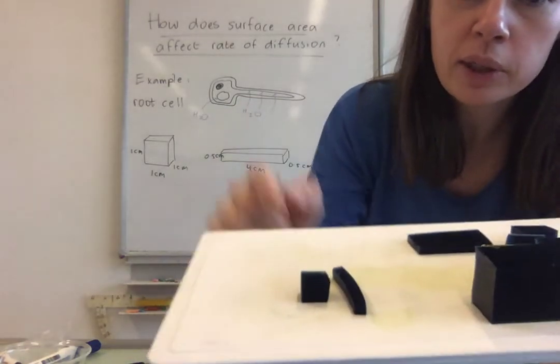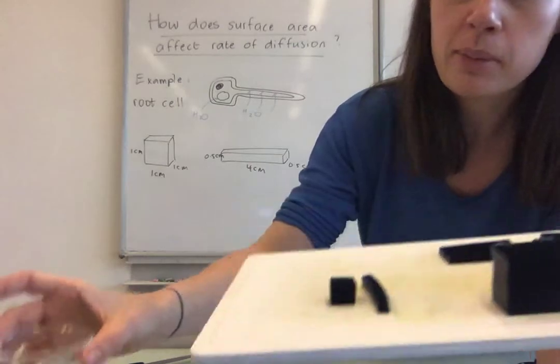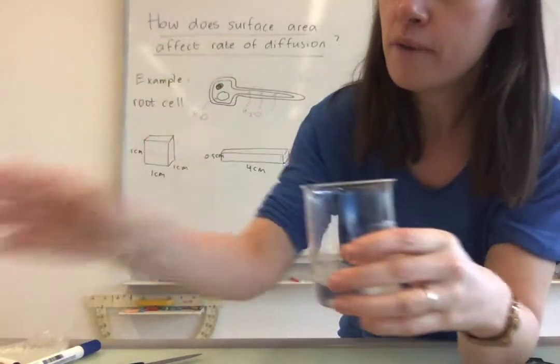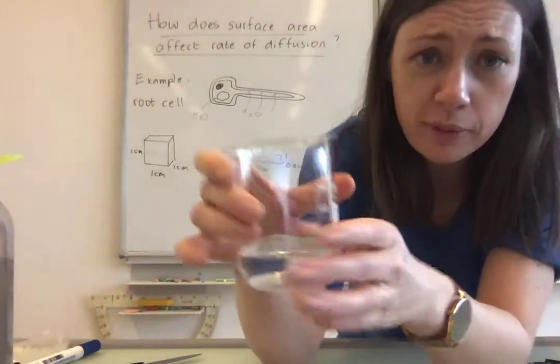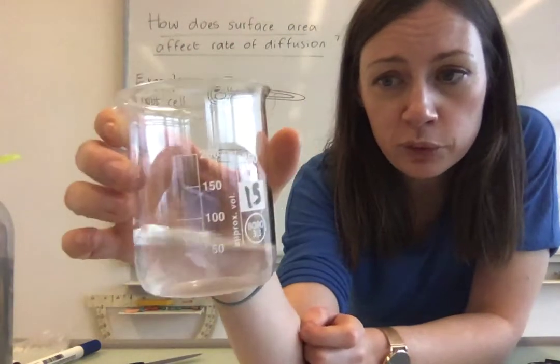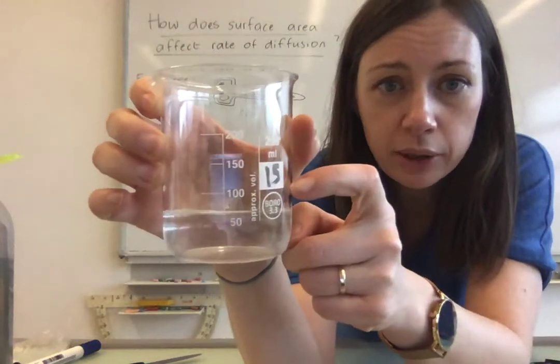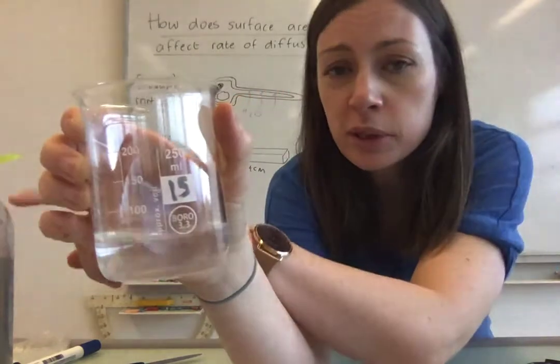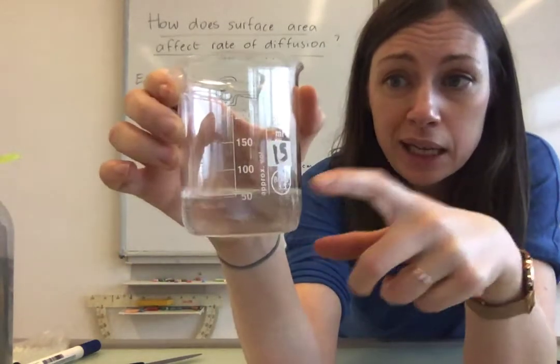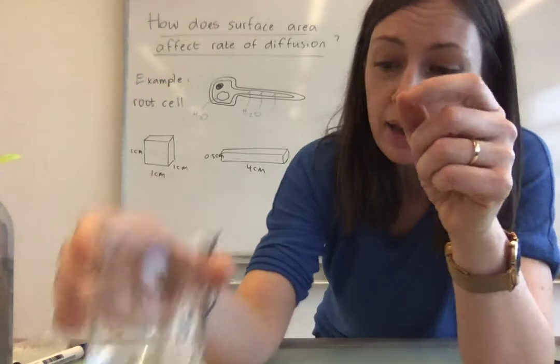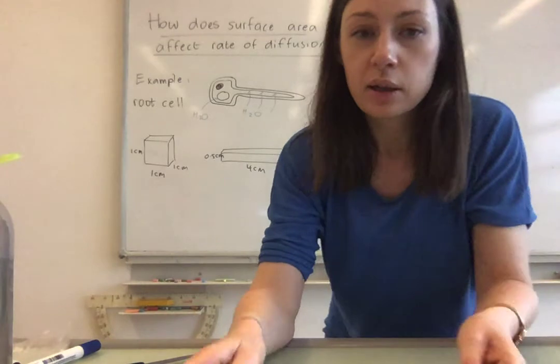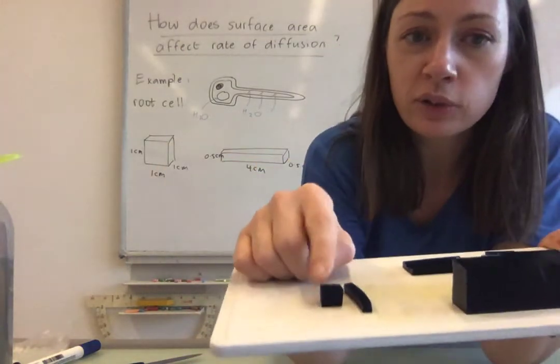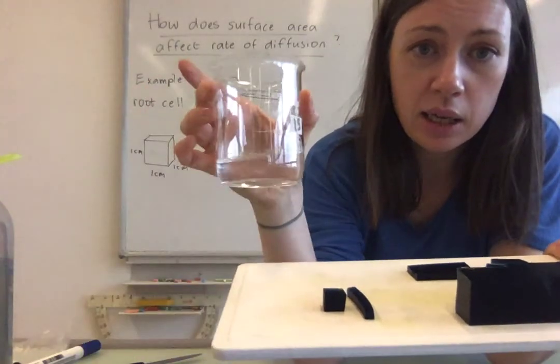Next thing that we're going to do is we're going to take these shapes and put them into some vinegar. Vinegar has got an acidic pH and we're going to put 50 centimeters cubed of vinegar in our beaker. So 50 centimeters cubed of 9.5% vinegar in this beaker here. Next thing that we're going to do is we are going to get our shapes and put them in here.